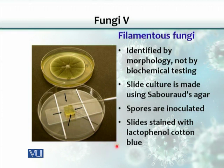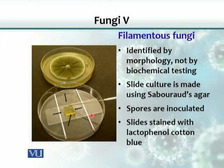The medium we use for supporting the nutrient requirements of fungi is called Sabouraud's agar. Fungi normally like to grow in acidic pH, much more acidic than bacterial isolation procedures. So Sabouraud's agar provides that low acidity as well.